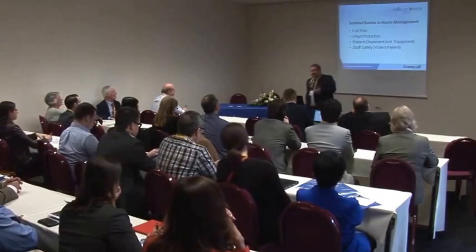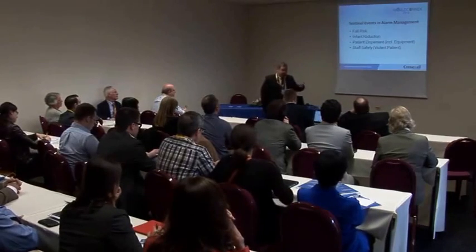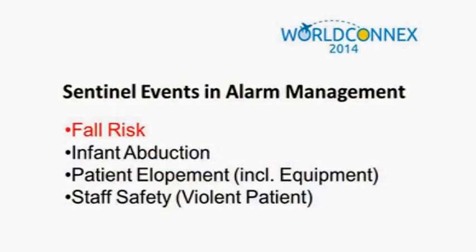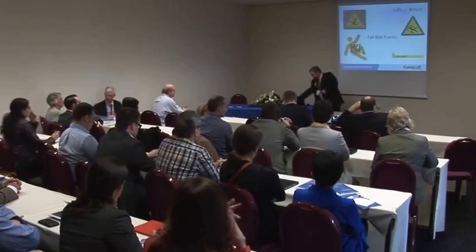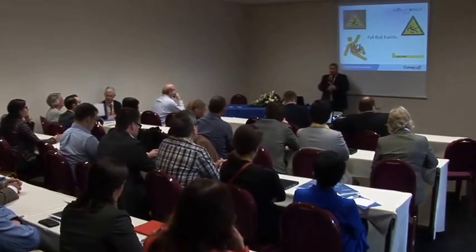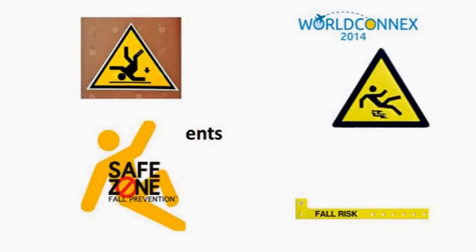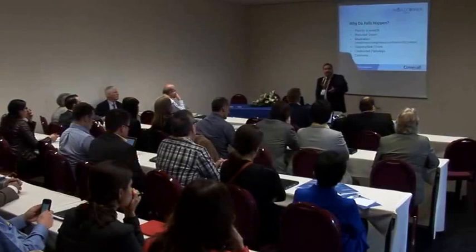Specifically in alarm management, we'll go over fall risk — why it's important and how it can be reduced. Other examples of sentinel events we want to prevent before they happen include infant abduction, patient elopement or missing persons (which can include equipment elopement), and staff safety — in North America known as a 'code white' involving a violent patient.